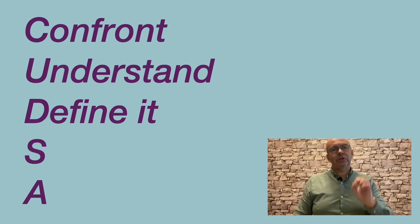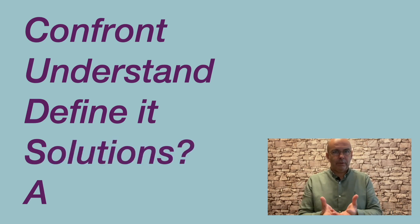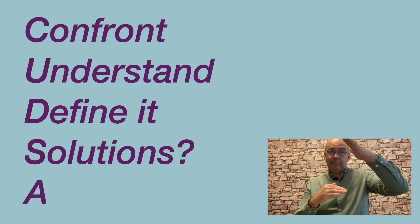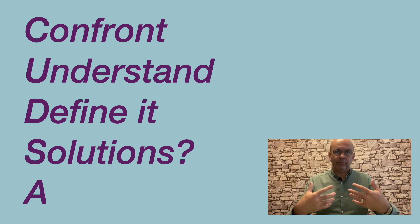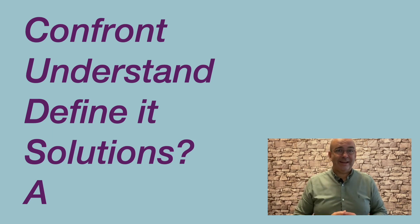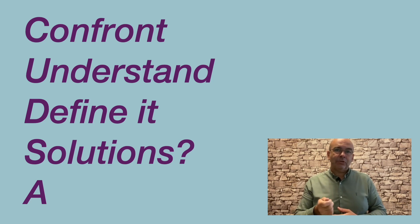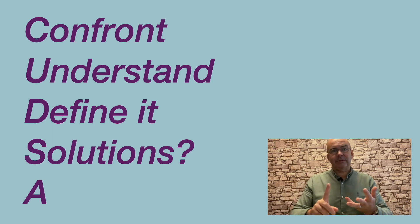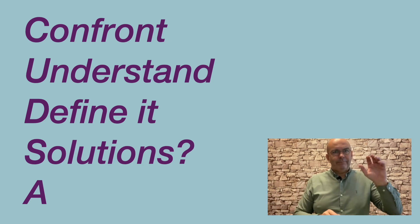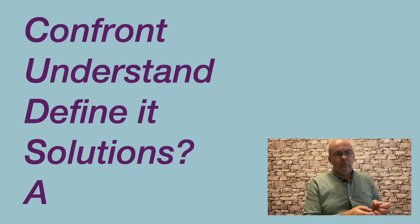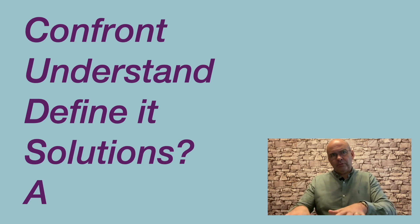Then we move on to S — Searching for solutions — and this is collaborative wherever possible. We're trying to get solutions onto the table from both parties. They may have great ideas that are easy to implement that you'd never think of. But they may also have unreasonable expectations, and we need them to tell us so we can manage those. So what I want, what I'd like, what I need — get it all out, then put your ideas on the table and work through what's feasible.